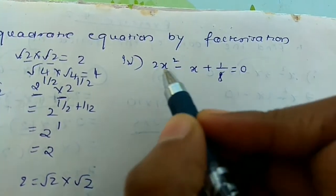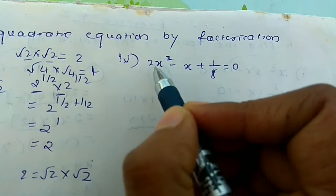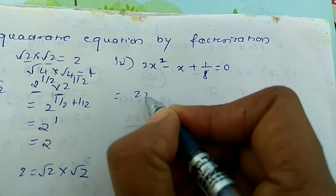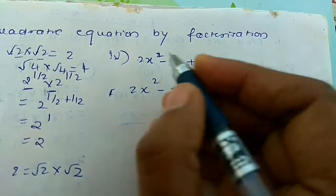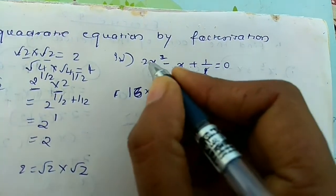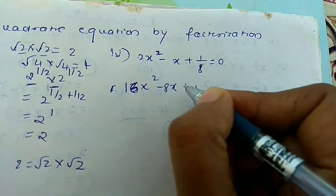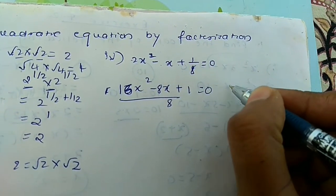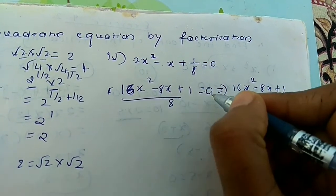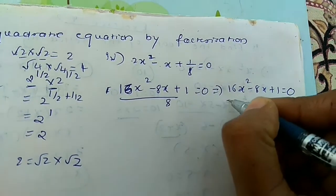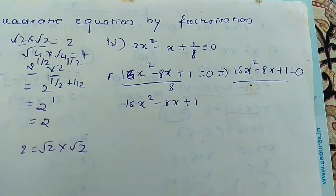For the fourth example, first solve and get the equation in standard form. Multiplying through by 8 (the LCM), we get 2x² − x becomes 16x² and (1/8) becomes 1, giving 16x² − 8x + 1 = 0. This is our quadratic equation and we will find its zeros.